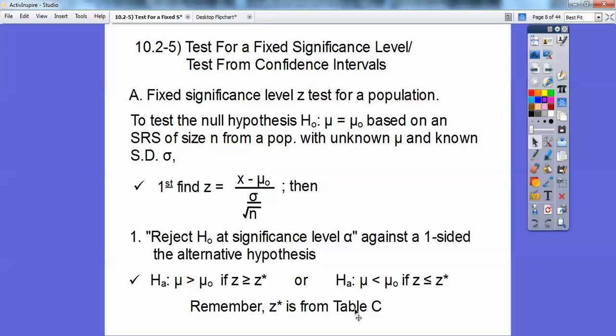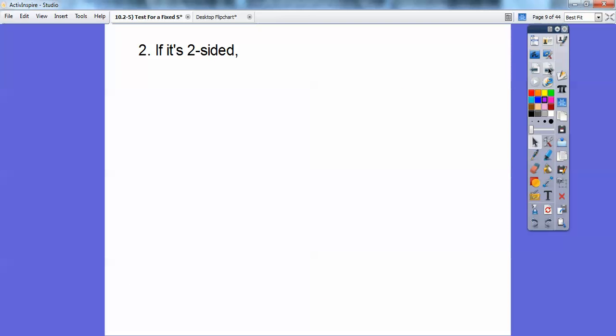And then so remember, our z* is from table C in the back of the book, so get your books out. We're going to need these books. Get them out, so you're going to need it here shortly. So if it's a two-sided one, then it means it's not equal to. So we're going to do the z*, but your z* is going to be for both tails, so positive z* on this side and the negative z* on that side. So your book only gives you the positive. That's why we always do the absolute value right here.